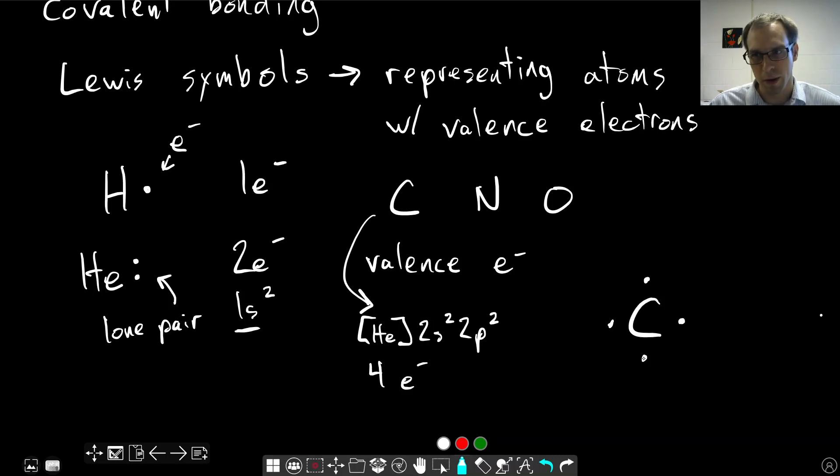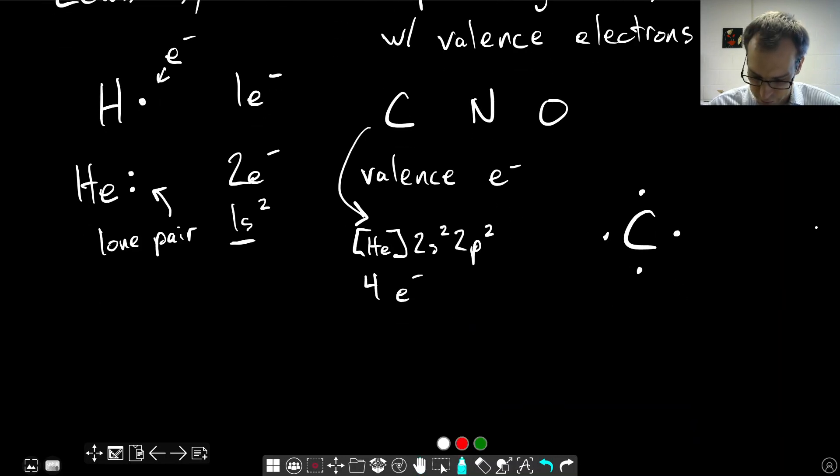Nitrogen has one more electron. And so if we write the Lewis symbol for nitrogen, we'll write those four dots. And we need to add one more. And we will now pair it up with one of the other dots. So it doesn't matter which one. I picked the left out of convenience, but it could be right, top, bottom. So these are not indicating how the actual geometries of these molecules are, just which atoms are attached to each other and things like that. And then oxygen has a total of six valence electrons. And so it would end up looking like this.